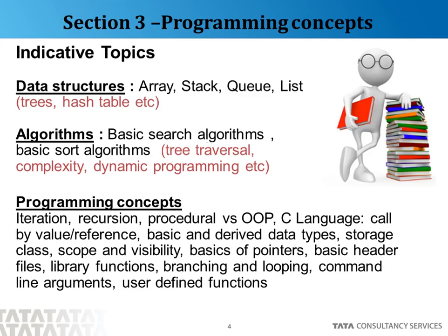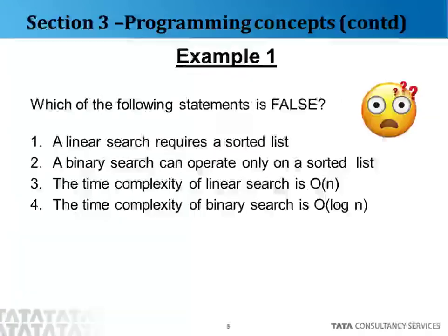For the remaining 3 questions that qualify you for the Digital round, the questions will be a bit more difficult. Additional topics shown here in red color include hash tables, binary trees, tree traversal, time and space complexity, and dynamic programming.